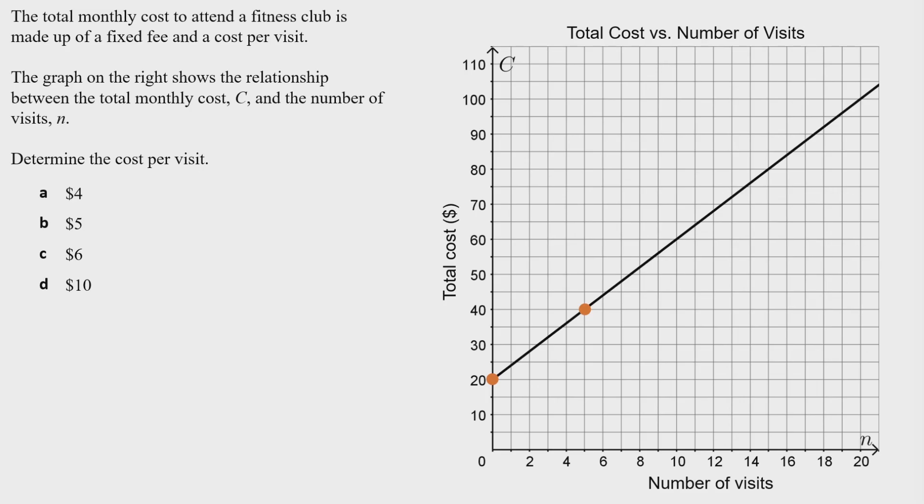To find the cost per visit, we need to investigate how the cost changes from our first point to our second point, and how many visits that corresponds to. We do this by seeing how much we move over and up from one point to the next. You could also go up and then over—it makes no difference.